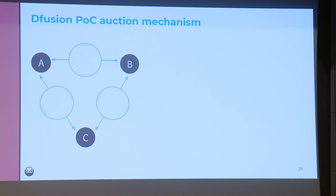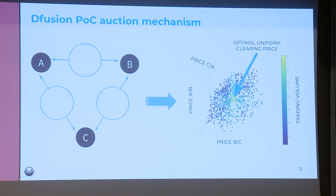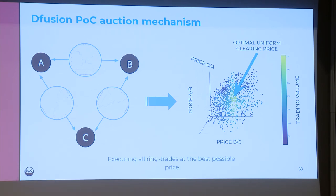This is not easy to visualize, but here is the idea. After collecting all orders between different stable coins, we get overlapping order books for each token pair. To solve this optimization problem, we map the order books into a multidimensional space where the axes are prices, and each point represents a set of arbitrage-free prices. We then check how much volume can be matched at exactly those prices, and we are interested in the ones generating the most trading volume — those will execute all ring trades at the best possible price.